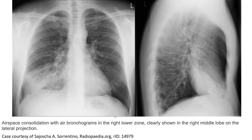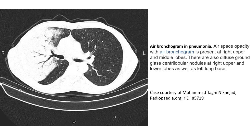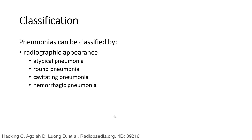This is the case of right middle lobe pneumonia. The axial CT shows airspace opacity with air bronchogram at the right upper and middle lobe. There are also a few ground-glass centrilobular nodules at the right upper and lower lobe, as well as involvement of the right upper and middle lobe.